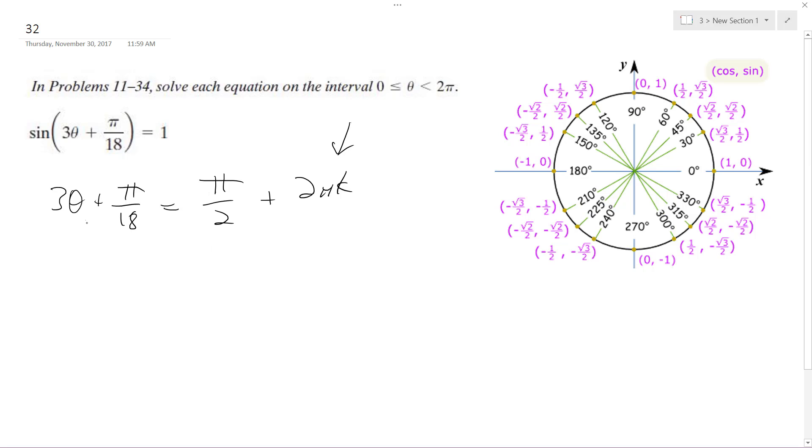All right, so I'm going to move pi over 18 to the other side, so we get pi over 2 minus pi over 18. That ends up being 9 pi over 18, so it becomes 8 pi over 18, which reduces down to—basically I took pi over 2 minus pi over 18—8 pi over 18 reduces down to 2 pi over 9.